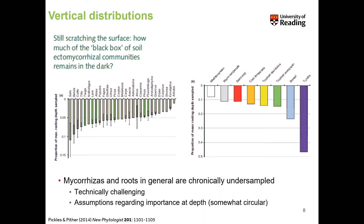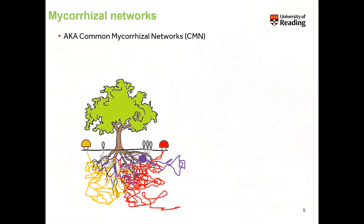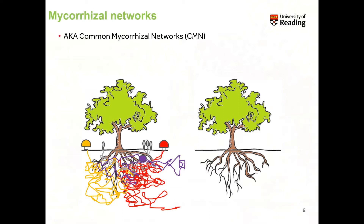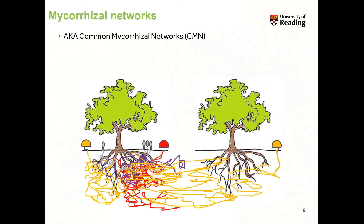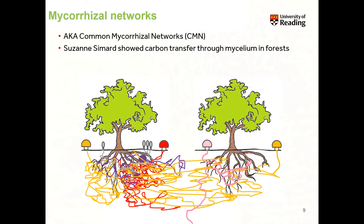You're probably all interested in mycorrhizal networks — one of the exciting things that Suzanne Simard has captured the public's attention with lately. You might also hear them referred to as common mycorrhizal networks, or CMNs. If you have the same fungus that links up multiple trees, you've got your mycorrhizal network. Of course you've got multiple fungal species — some associating with one tree, some with multiple trees and different species — and Suzanne was able to show carbon transfer through fungal mycelium in forests from one tree to another through its mycorrhizas, popularized as the wood wide web.